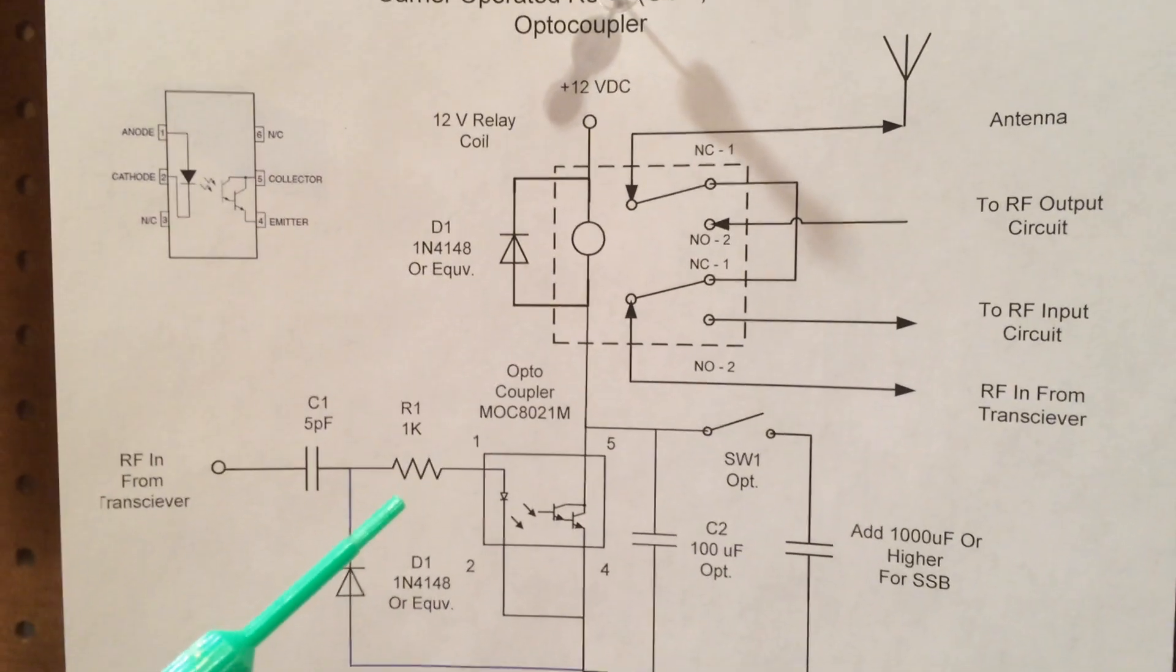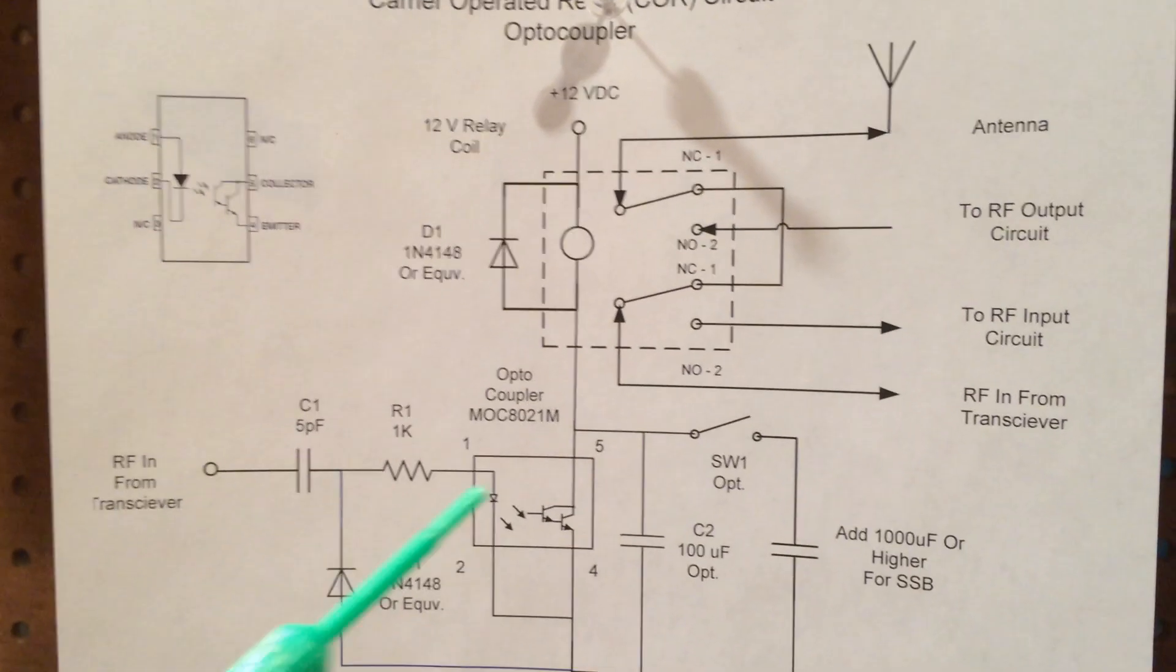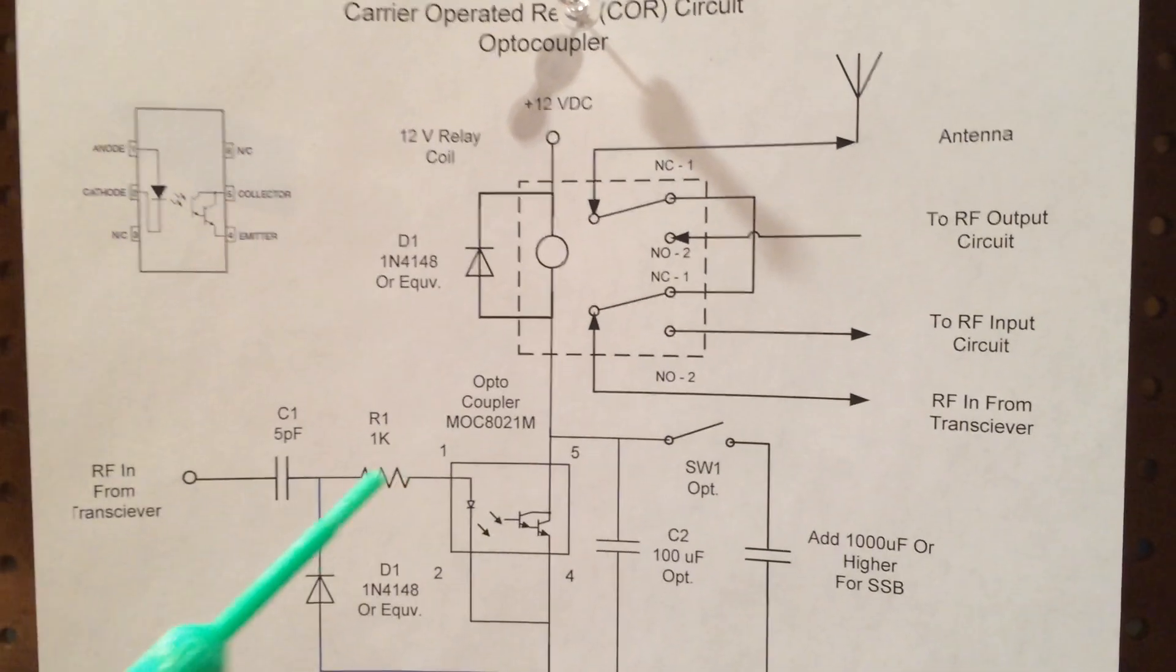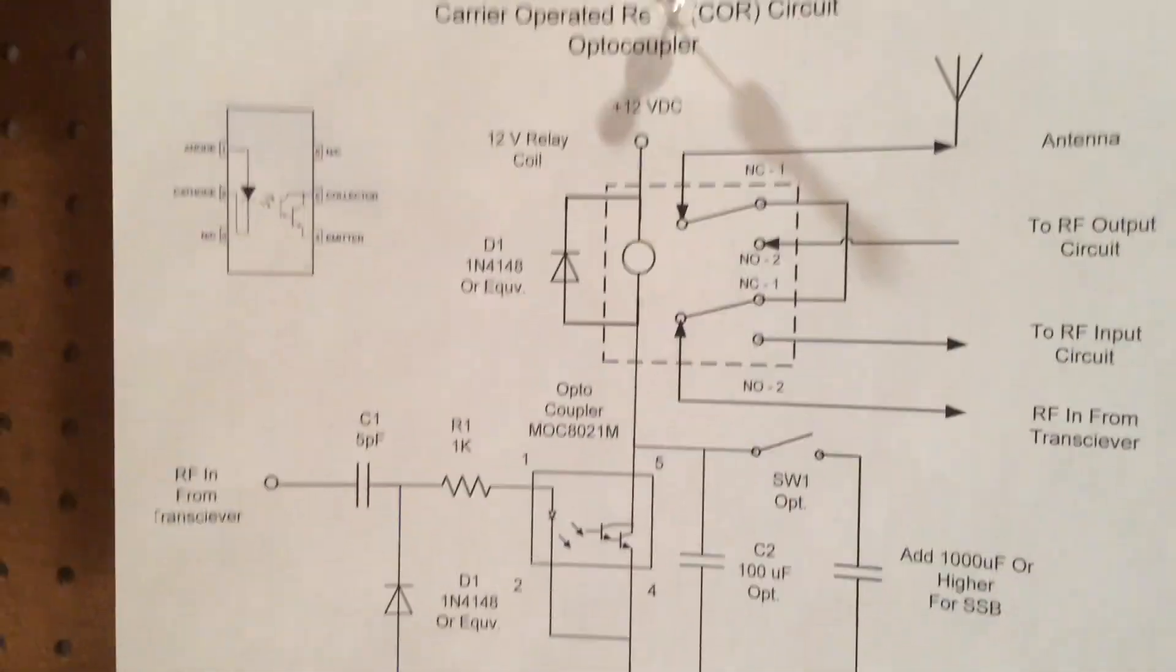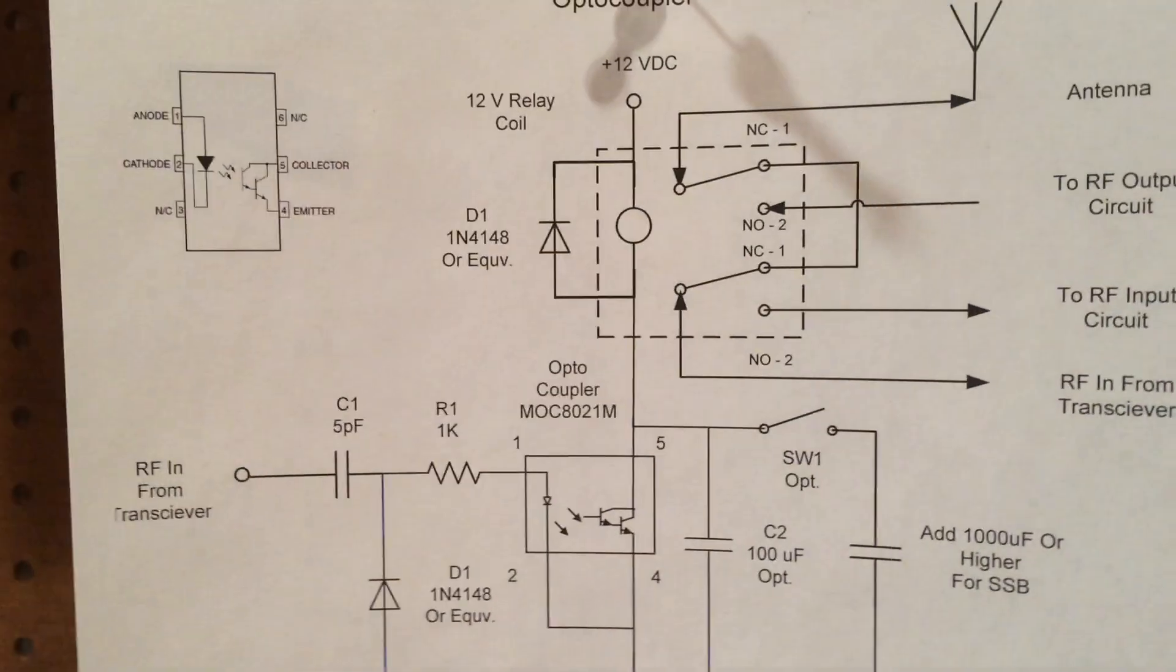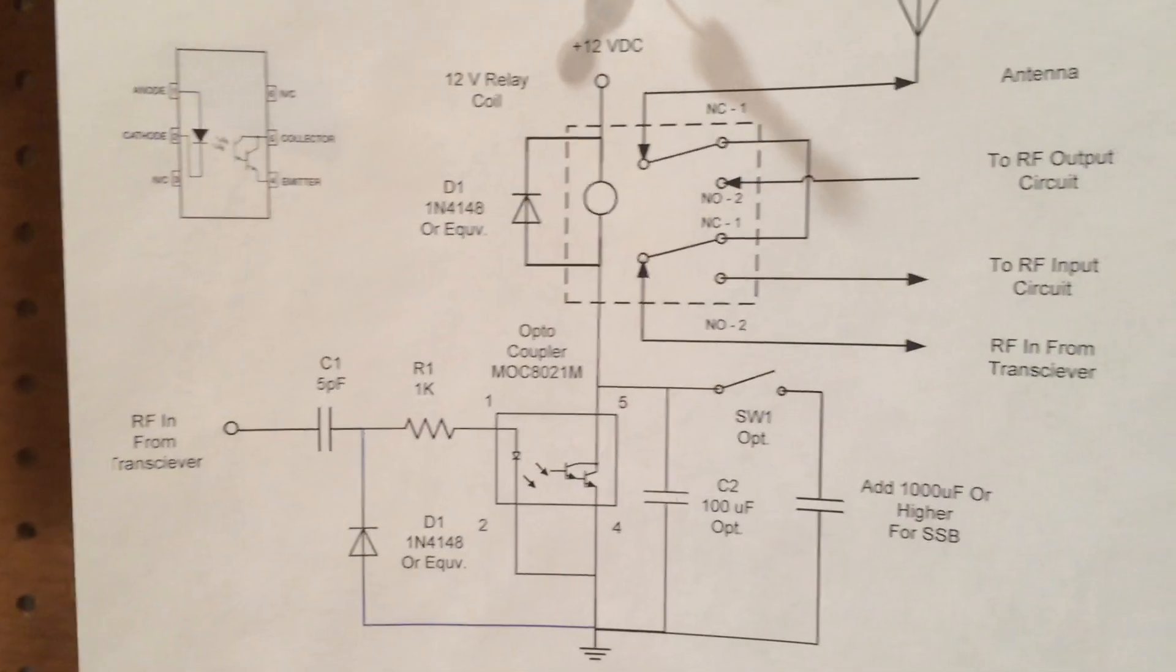I've got a little bit more series impedance, and then I just use the RF signal to drive this photo diode, and basically that in turn drives the photo transistor.